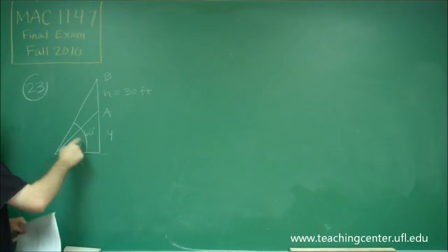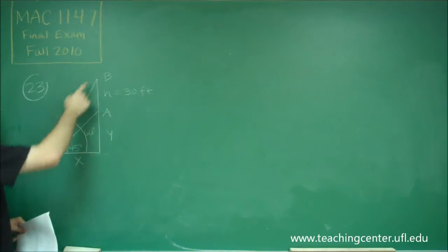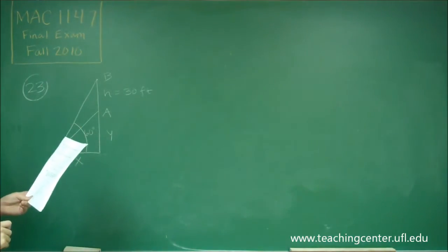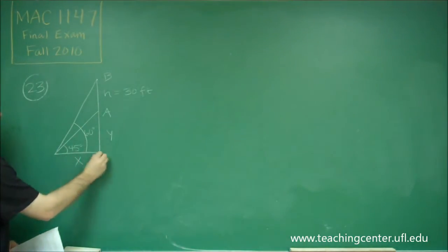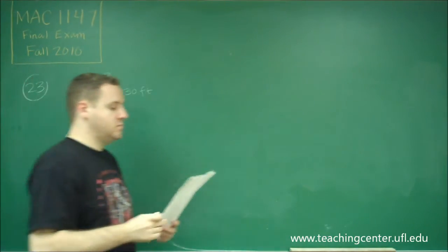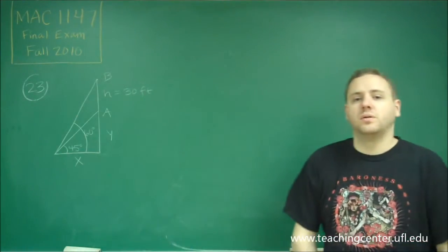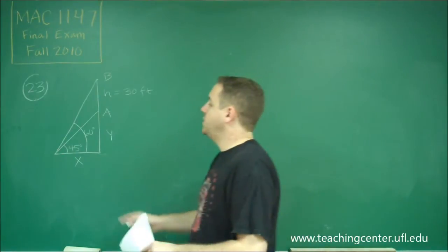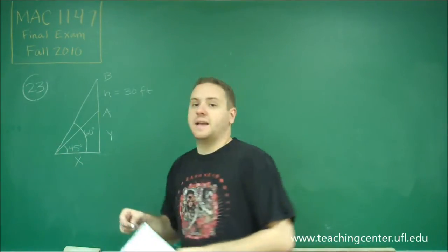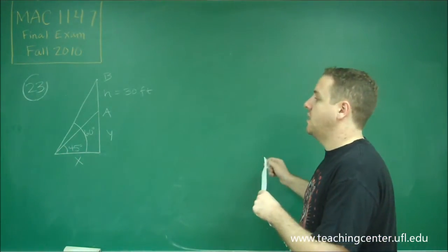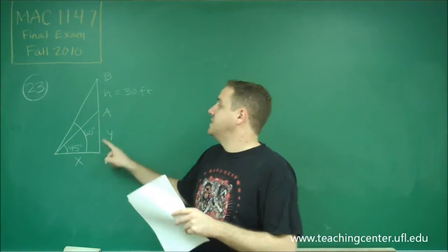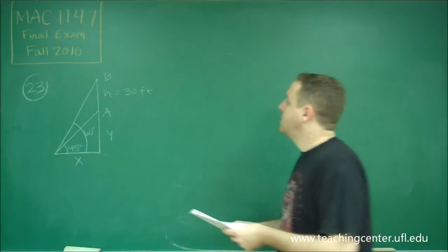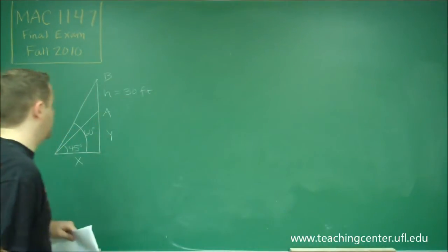The angle from the bottom line up to the line going to B is 60 degrees. What we want to find is what X equals. We can set up a couple of equations. We want to use tangent, because that will relate our opposite to our adjacent. We don't want to deal with the hypotenuse because we don't know anything about it.